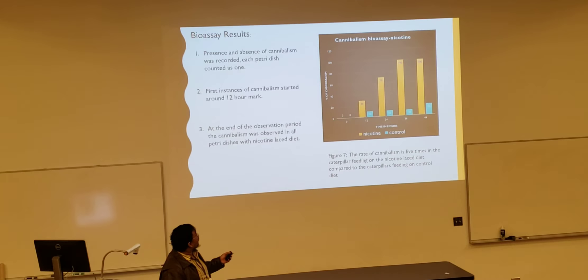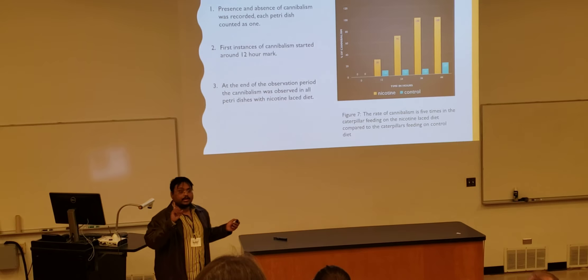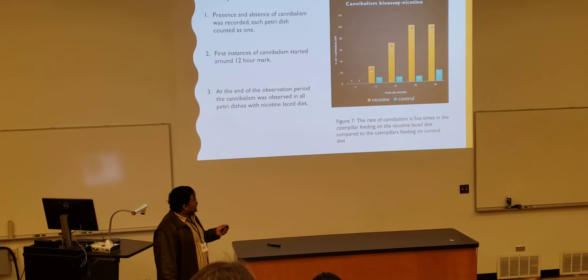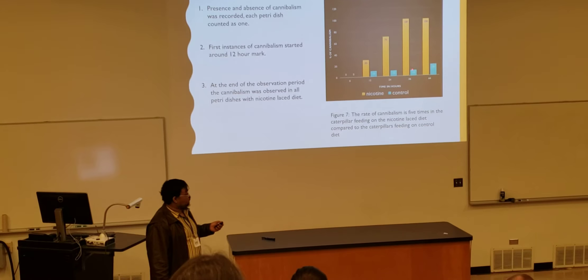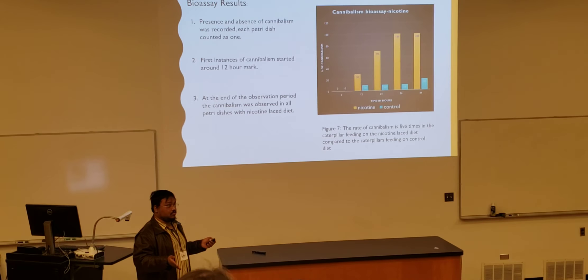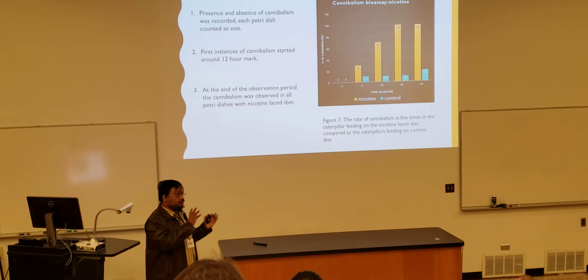These are the bioassay results. Each event was scored as one victim — one instance of cannibalism counts as one. By the first time point, we start to see cannibalism taking place. By the next hour, all replicates show cannibalism when there is nicotine, compared to just one in the control. And this caterpillar does show some cannibalism anyway. By the end of our observation period it is five times higher, so nicotine is definitely driving the cannibalism.